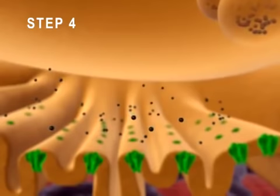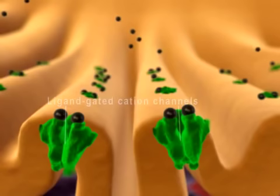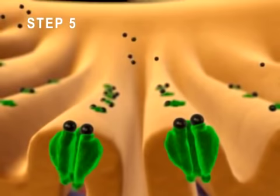Step 4: Acetylcholine diffuses across the synaptic cleft and binds to acetylcholine receptors, which contain ligand-gated cation channels. Step 5: These ligand-gated cation channels open.